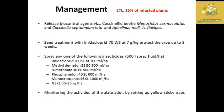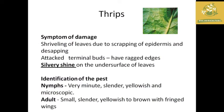The next pest is thrips. The symptom of damage is a silvery shine on the under surface of leaves and ragged edges at the terminal bud. The nymph is very mild, slender, yellowish or microscopic in color, and the adult is small, slender, yellowish to brown, fringed with wings.